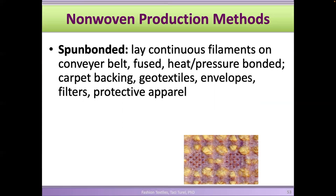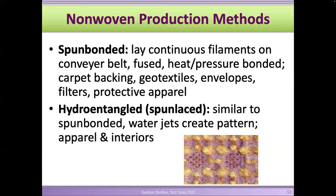Spunbonding is another method that lays continuous filaments on a conveyor belt and then fuses or uses heat to bond them together. A lot of masks are created by spunbonding fibers together — some layers inside a mask are spunbonded. Sometimes they're hydro-entangled, using water jets to create a pattern and entangle fibers. Spunbonding is used in carpets, geotextiles, envelopes, filters, and protective apparel. Masks are usually produced by spunbonding fibers, and those fibers create a layer where viruses get trapped inside the tortuous fiber environment.